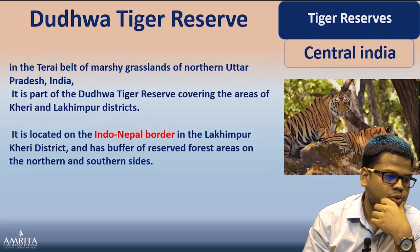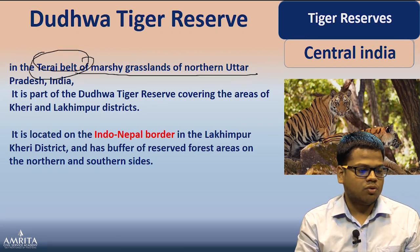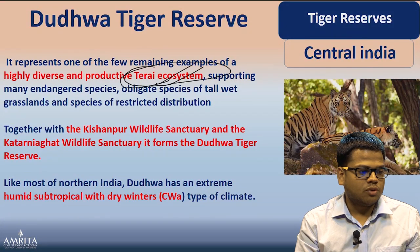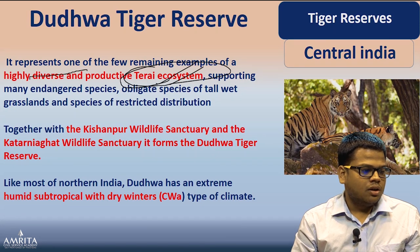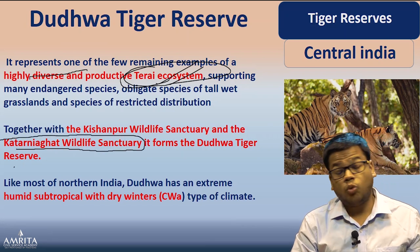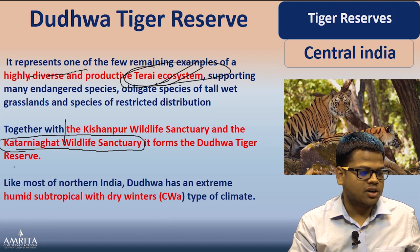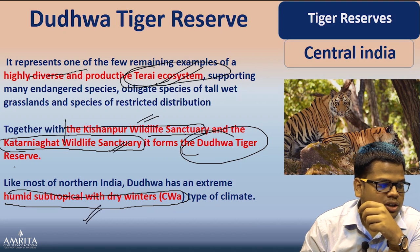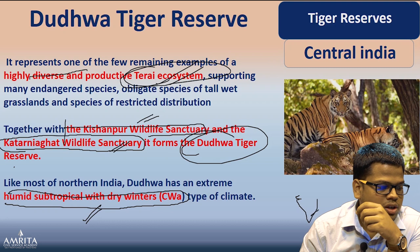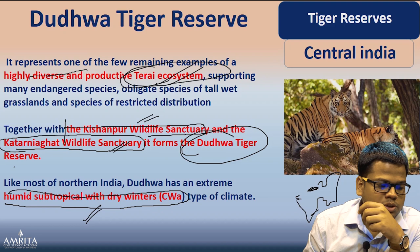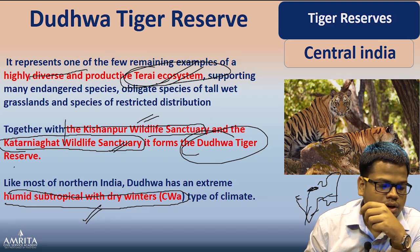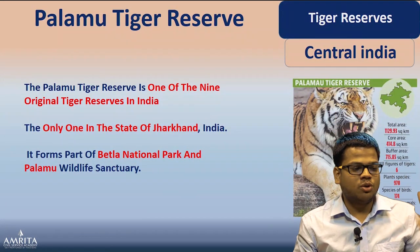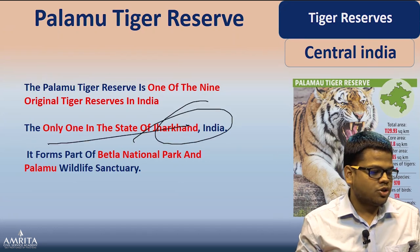Dudhwa Tiger Reserve is also in the Terai belt in the marshy grasslands of northern Uttar Pradesh, again on the India-Nepal border. It includes Katarniaghat Wildlife Sanctuary and Kishanpur Wildlife Sanctuary. Together these form the Dudhwa Tiger Reserve. It has an extreme CWA climate classification. Pilibhit was to the east and Valmiki is further north — remember their relative locations. This area and Pilibhit together have great conservation value for tigers as studied by WII.